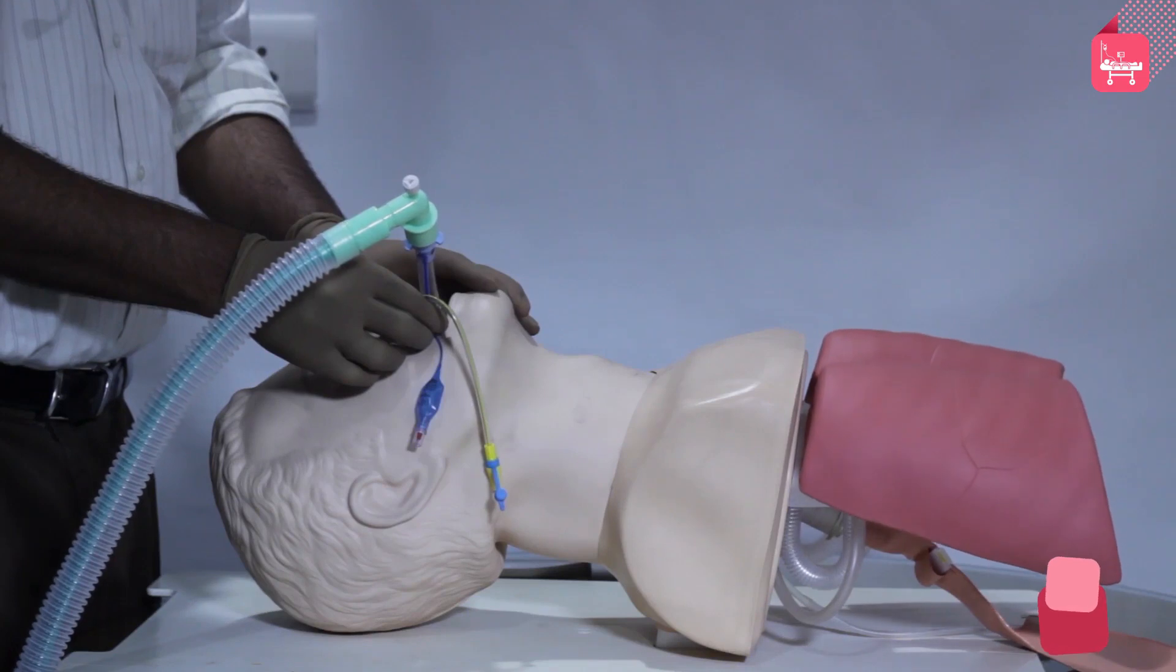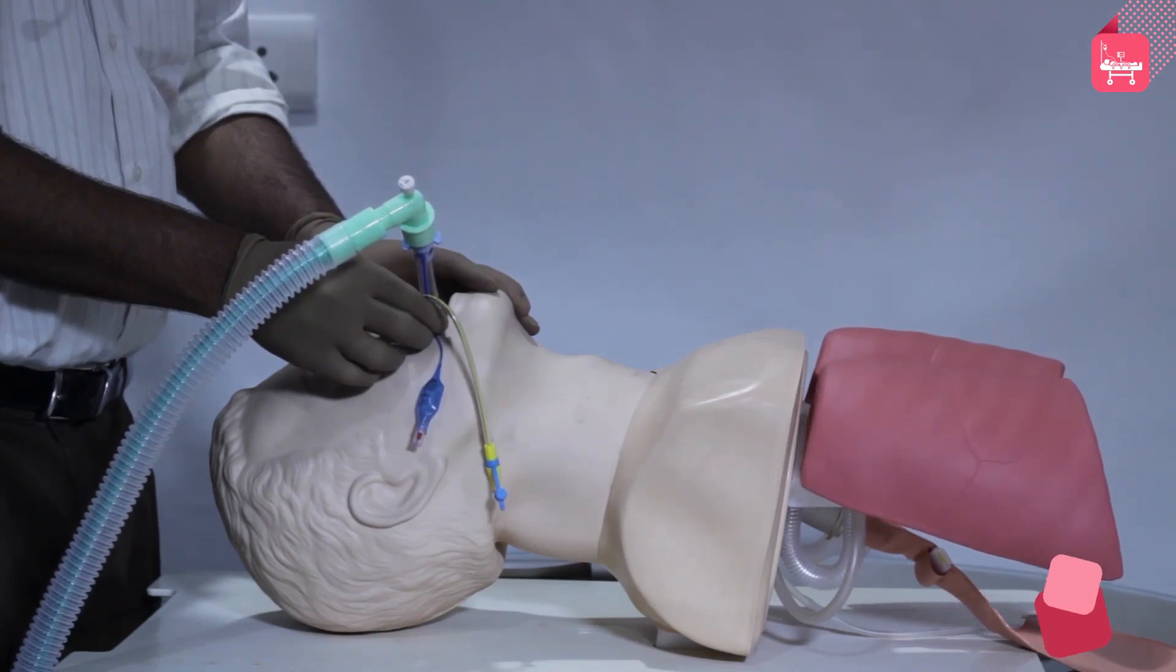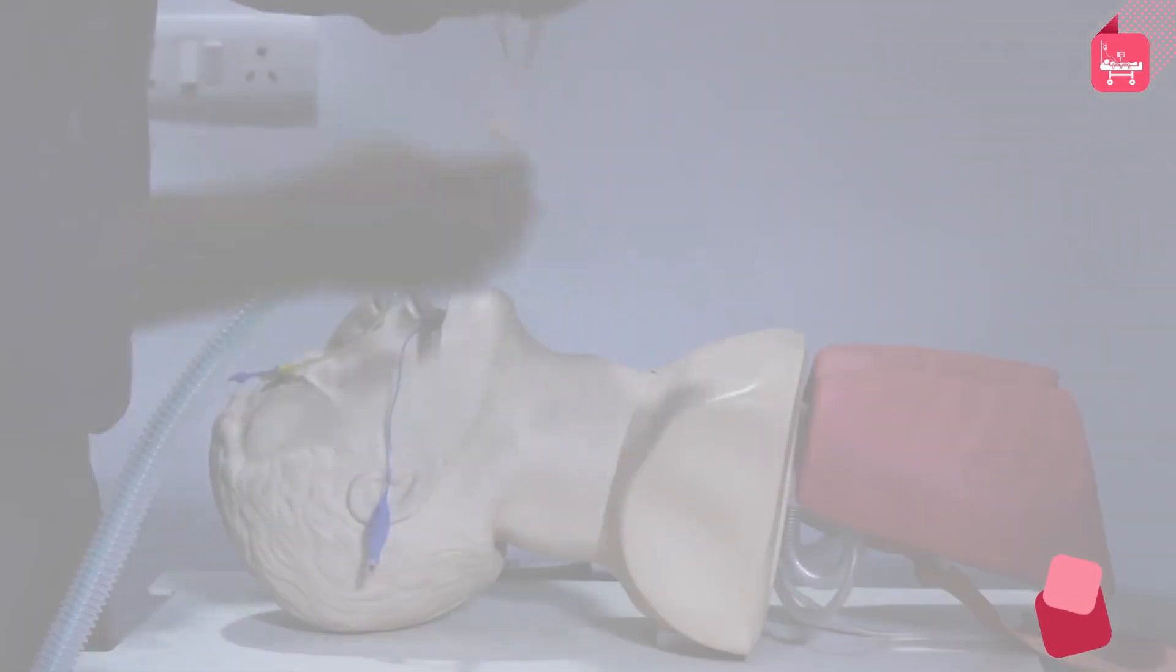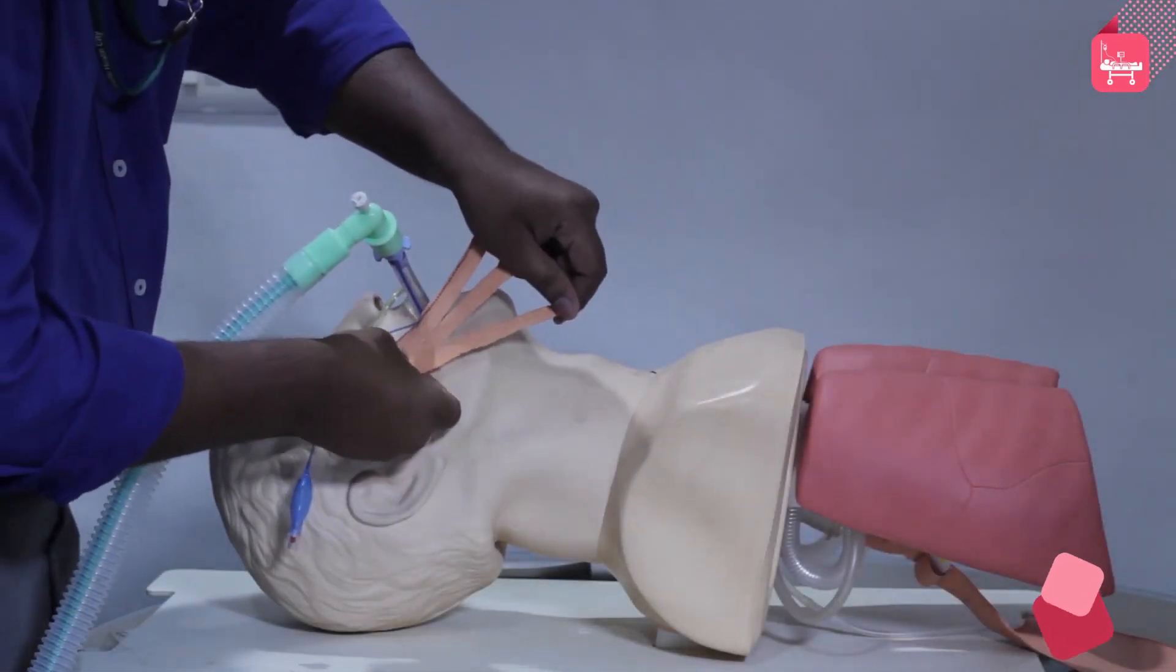Ventilate the patient: attach the tube to the breathing circuit. Ventilate the patient at a rate of 10 to 12 breaths per minute. Securing the tube: secure the ETT using adhesive tape.